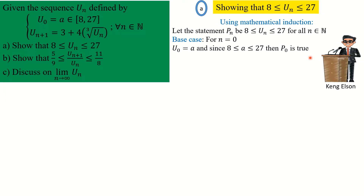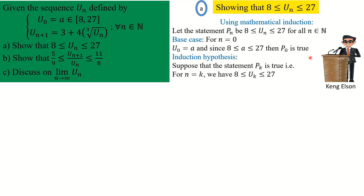Having P(0) true gives us the right to proceed with the induction process. The next — and most important — step is the induction hypothesis. Here we suppose that the statement P(k) is true, meaning that for n = k we have: 8 < u_k < 27. That is our supposition.